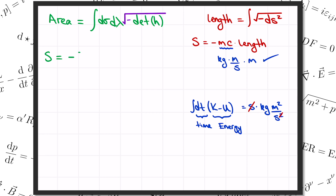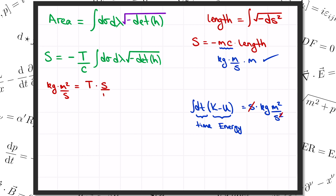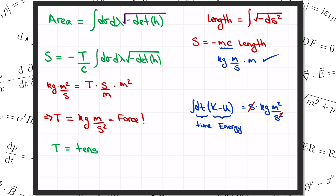Let's check the units. The action should be in kilograms meters squared per second. Our formula gives us whatever the units of T are, times one over c in seconds per meter, times the area in meters squared. So this constant T is measured in kilograms meters per second squared — which you recognize is a force. That's because T is the tension in the string. And so the action is proportional to the tension times the area of the worldsheet. So there we have it — this is the action for a relativistic string.